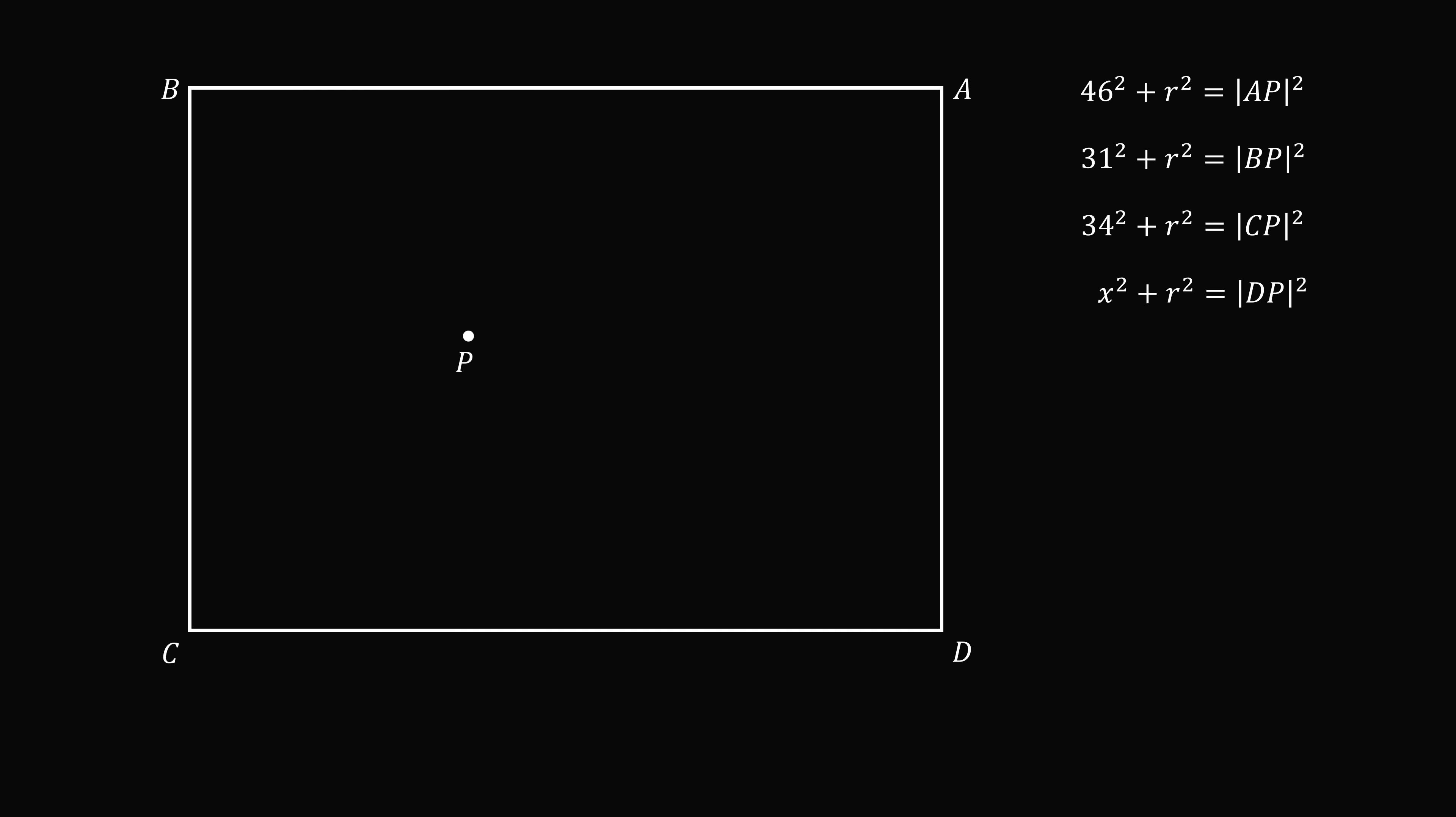To do that, we will use coordinate geometry. We'll let C be the origin. Let P have coordinates (p, q), let D have coordinates (d, 0), and let B have coordinates (0, b). Since ABCD is a rectangle, A has coordinates (d, b).